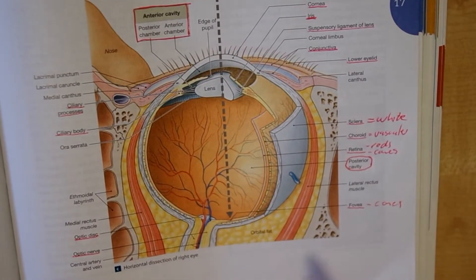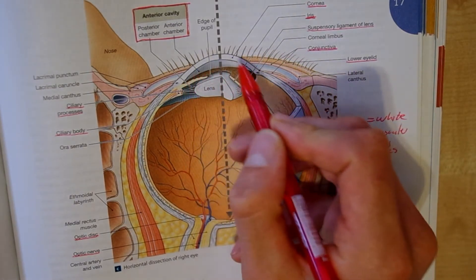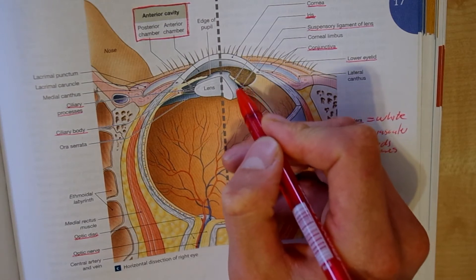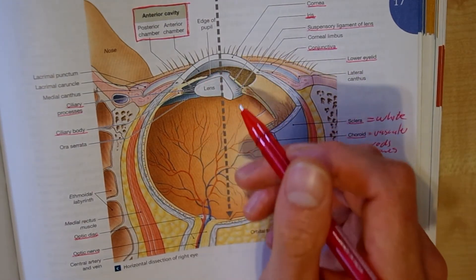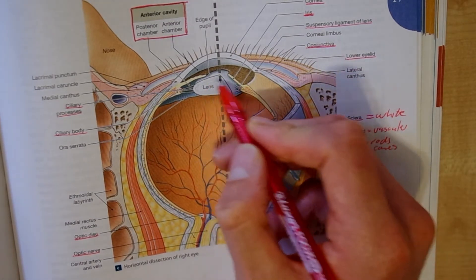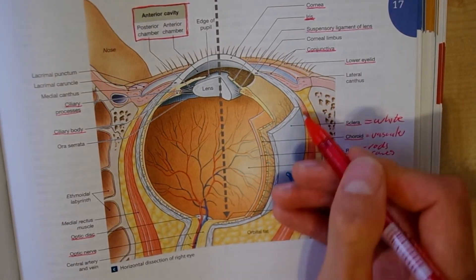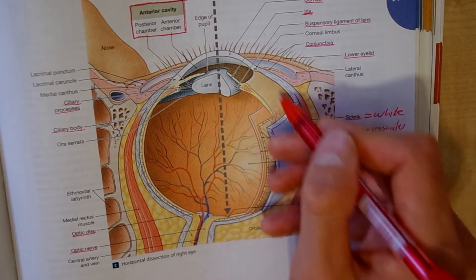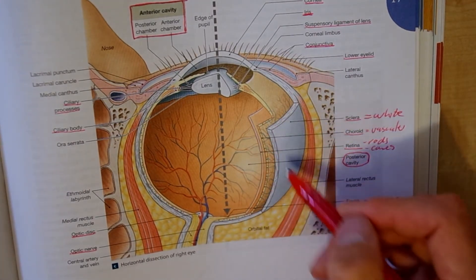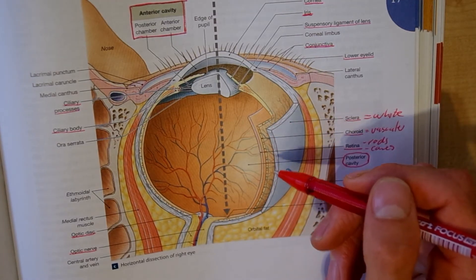Here we've got our structure of the eye — a horizontal dissection. We have our cornea, which is the outer protective covering of the eye. Next we have our iris, which gives color to our eyes — for example green, blue, yellow. We have suspensory ligaments that hold the lens. Our sclera makes up the whites of our eye, and underneath the sclera we've got a highly vascular layer called the choroid, which contains the blood supply. This is where oxygen and nutrients enter the eye and supply the surrounding tissues.